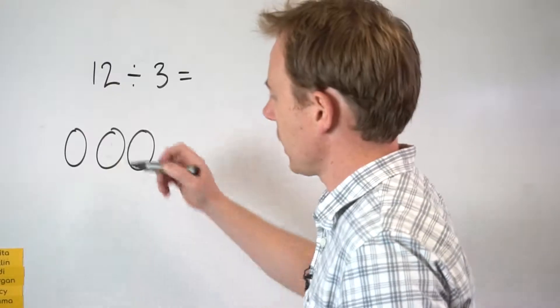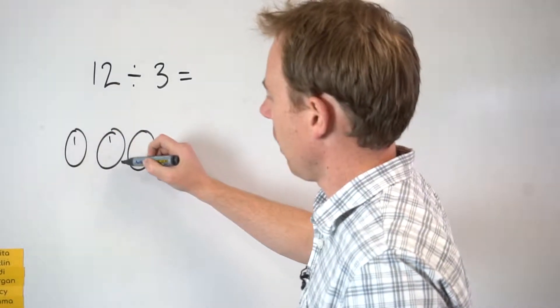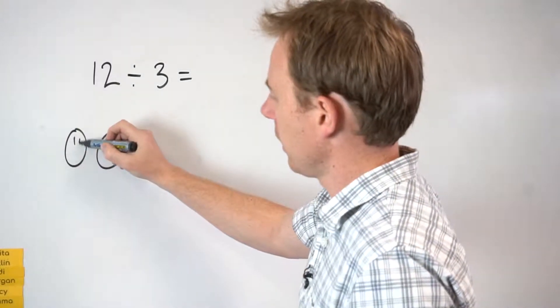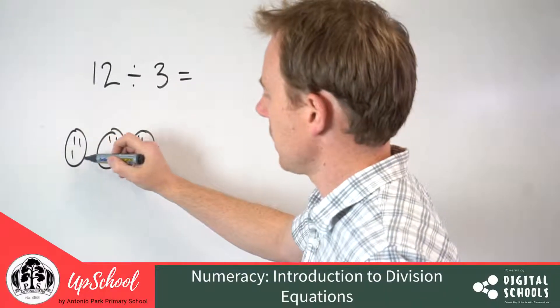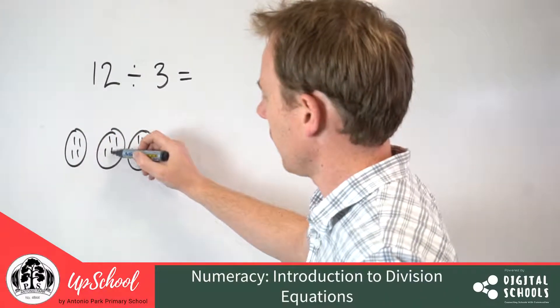And the best way to do it is just to go one step at a time. So I'm going to go 1, 2, 3, 4, 5, 6, 7, 8, 9, 10, 11, 12.